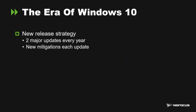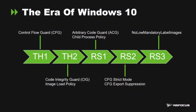But when Windows 10 was released, things changed. First, there are new release strategies: two major updates per year, with new mitigations in each update. In TH1 we got CFG. In TH2, we got CRG and image load policy. In RS1, we got ACG and child process policy. In RS2, we got CFG strict mode and CFG export suppression. And finally in RS3, we got low mandatory label image, which is an extension of the image loader policy.